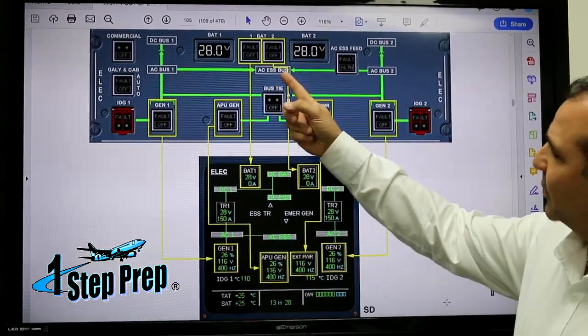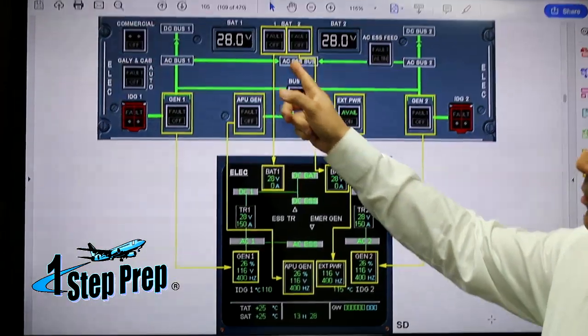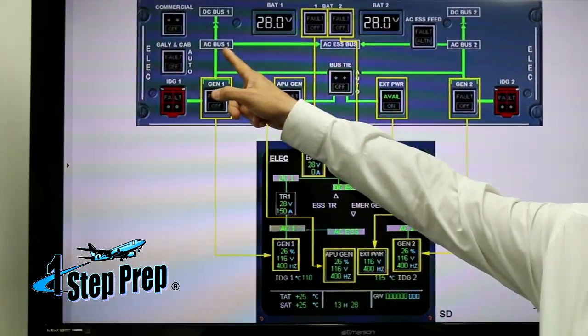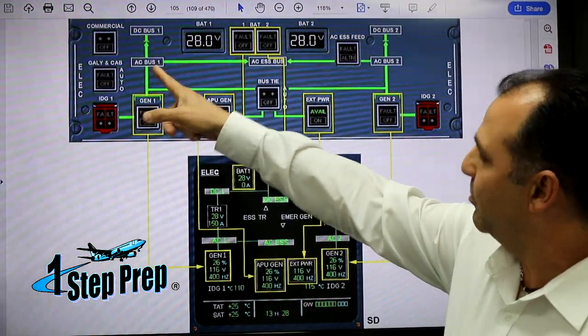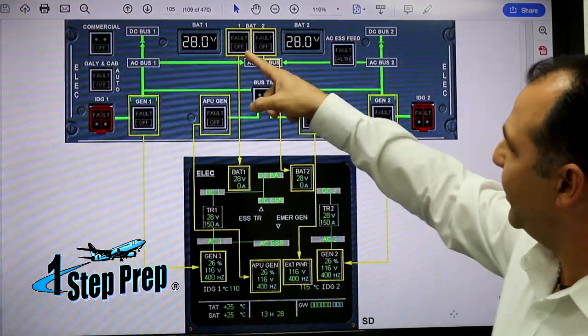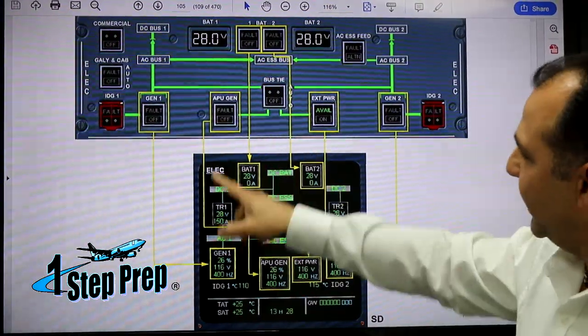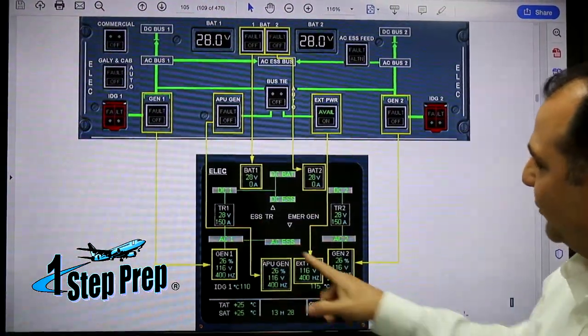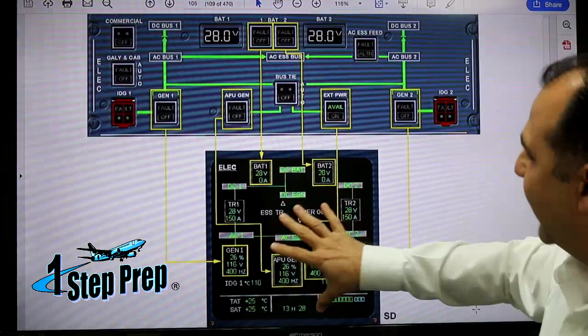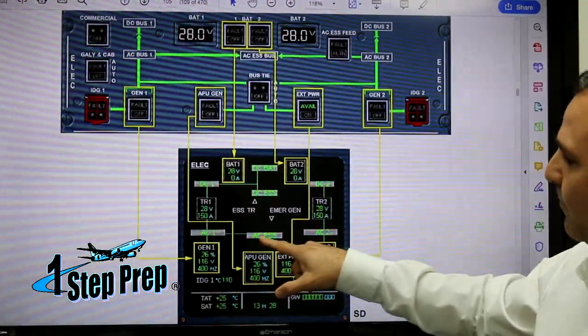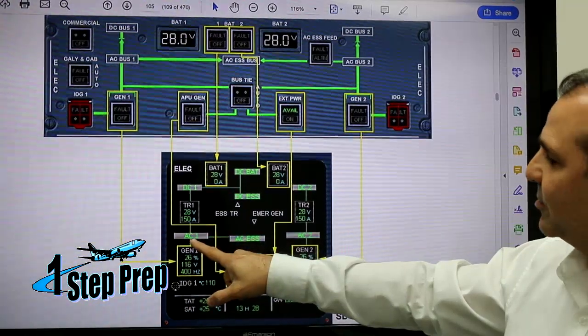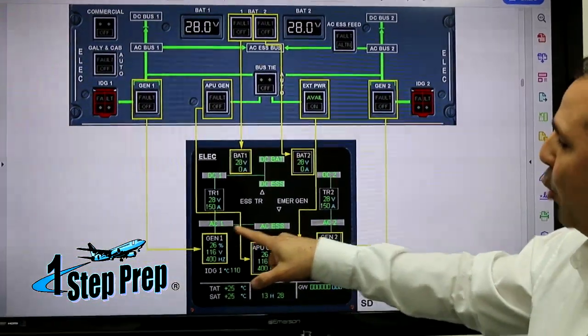Normally, AC Essential Bus gets its power from AC Bus 1. If you go down here to the diagram, to the ECAM electrical page, you can see the same thing. Remember, this is the diagram and this is your panel.